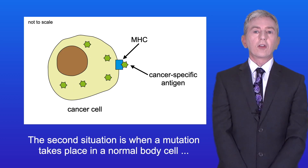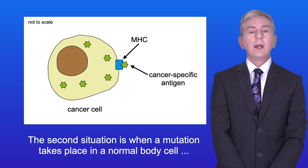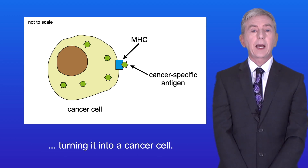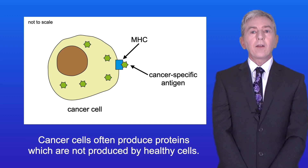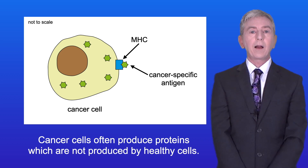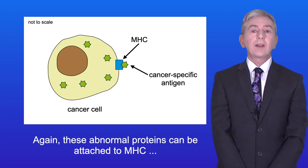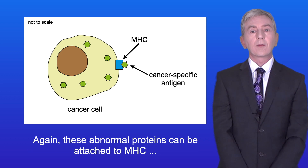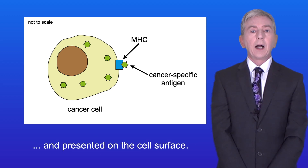The second situation is when a mutation takes place in a normal body cell, turning it into a cancer cell. Cancer cells often produce proteins which are not produced by healthy cells, and again these abnormal proteins can be attached to MHC and presented on the cell surface.